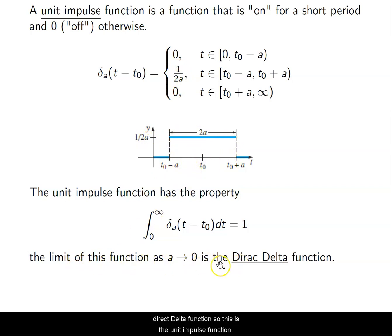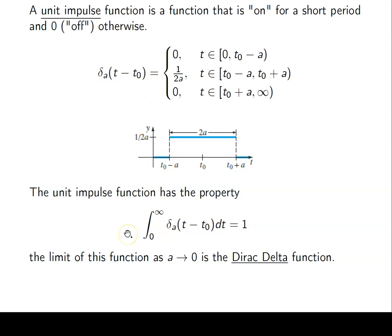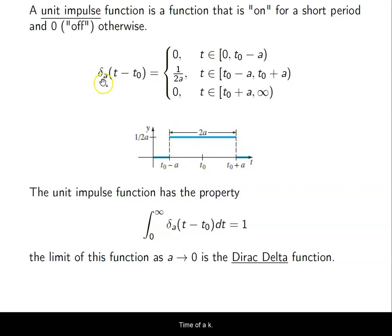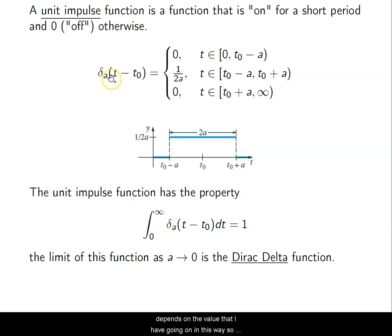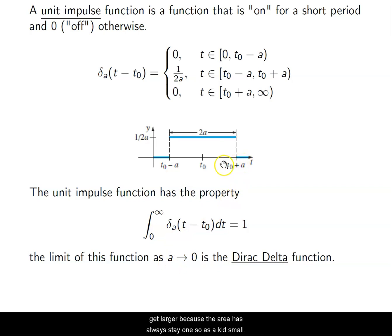The limit of this function as a goes to 0 is what we call the Dirac-Delta function. The unit impulse function starts at t-naught and has a length of time of a, with a height of 1/(2a). As a gets smaller, the length gets smaller and the height has to get larger, because the area always has to stay 1. So 1 over 2 times a smaller value gives you a larger height.